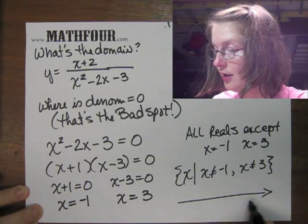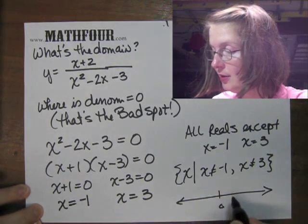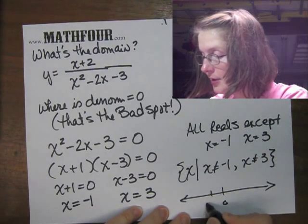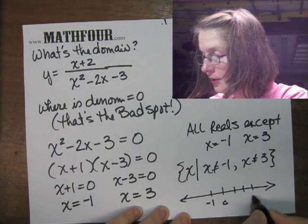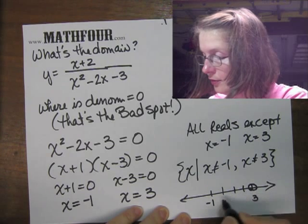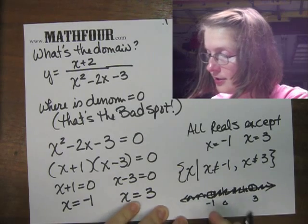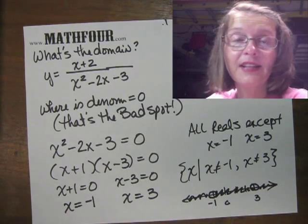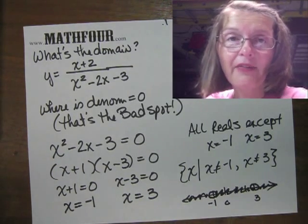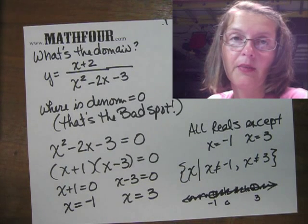So let me draw it on a number line. Here's 0. Here's -1. Here's 3. Put your gaps there. And then shade and so on. And so that's how to find the domain specifically when we're dealing with the denominator.